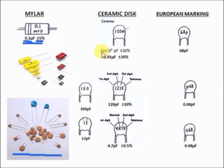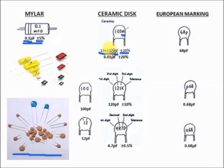For example, '103M': copy the first two digits — that gives you 10 — then the third digit '3' is the exponent of base 10, so it becomes 10 × 10³ picofarad. The 'M' is not micro here — that is the tolerance. Look it up in the capacitor table: capital M is equivalent to plus or minus 20%. Simplified using scientific notation, the equivalent is 0.01 microfarad plus or minus 20% — both forms are correct.